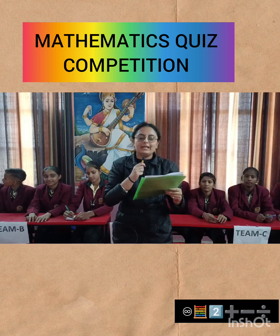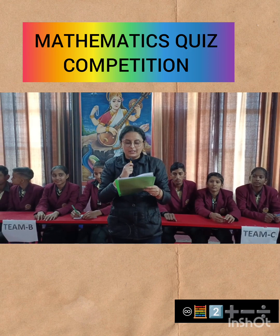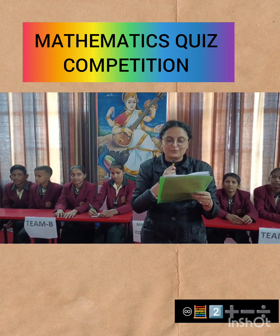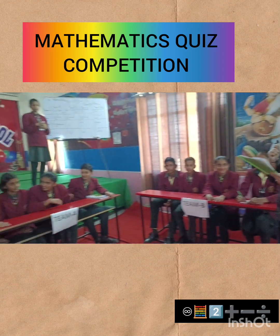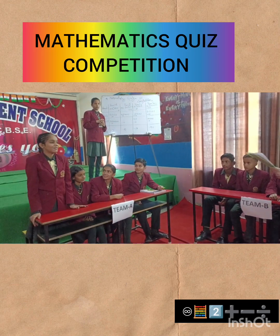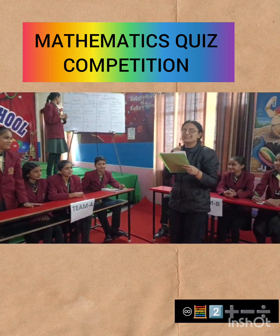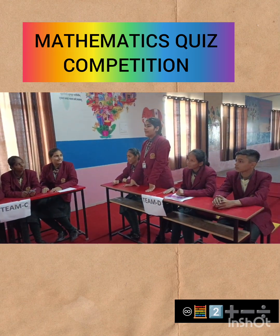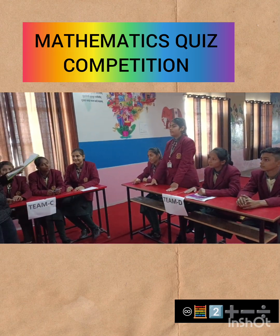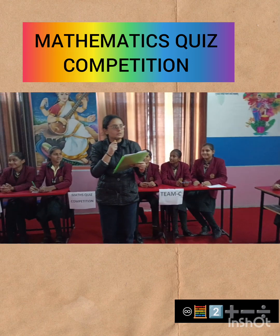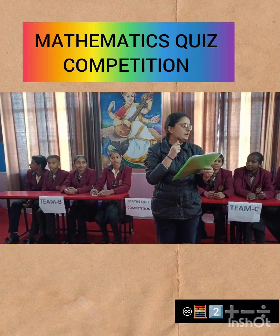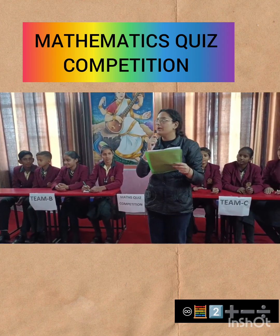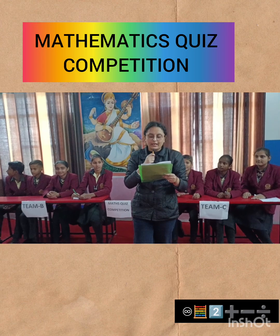Next question: what is the formula of probability? Team A answers wrong. Team D gives the right answer: favorable outcomes divided by total outcomes — five marks to Team D.